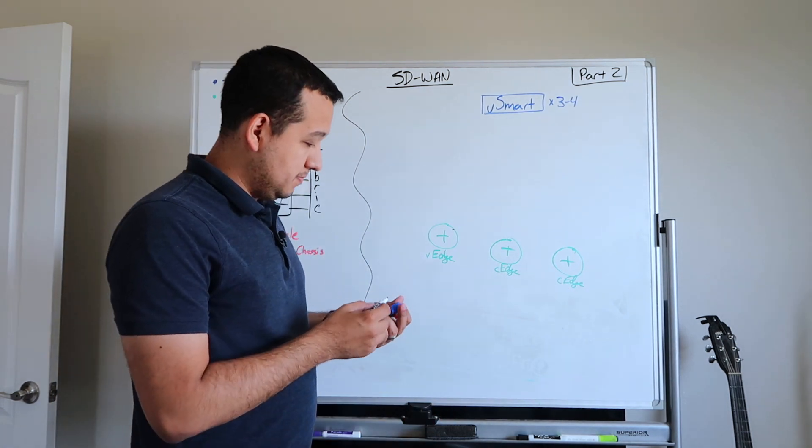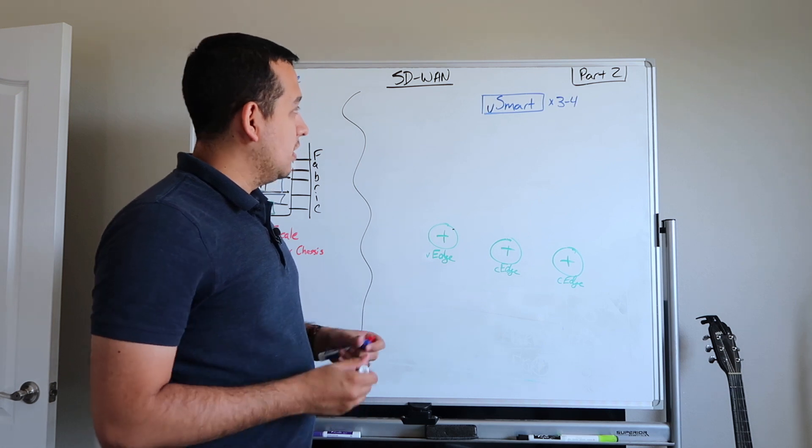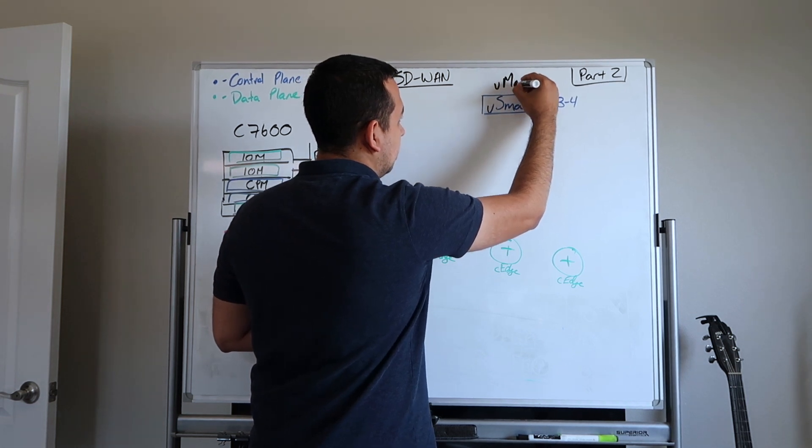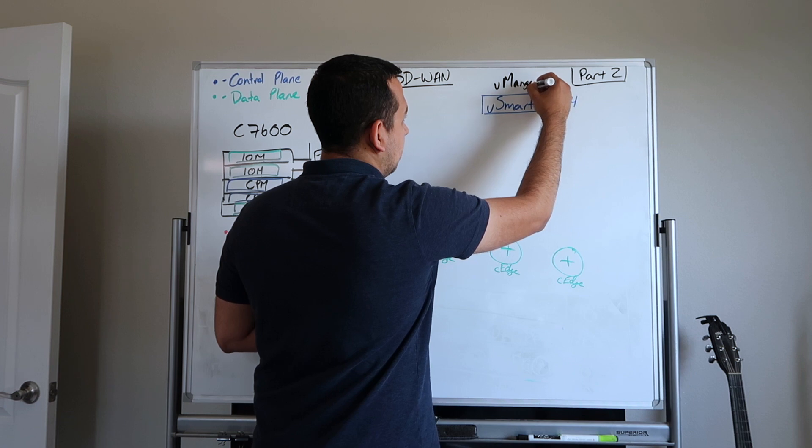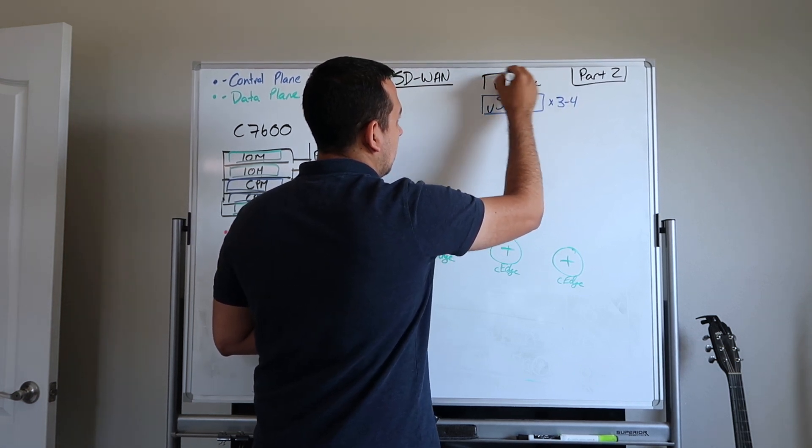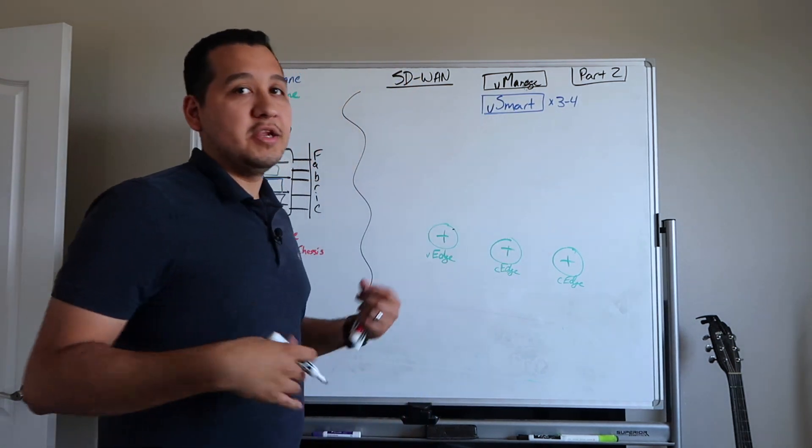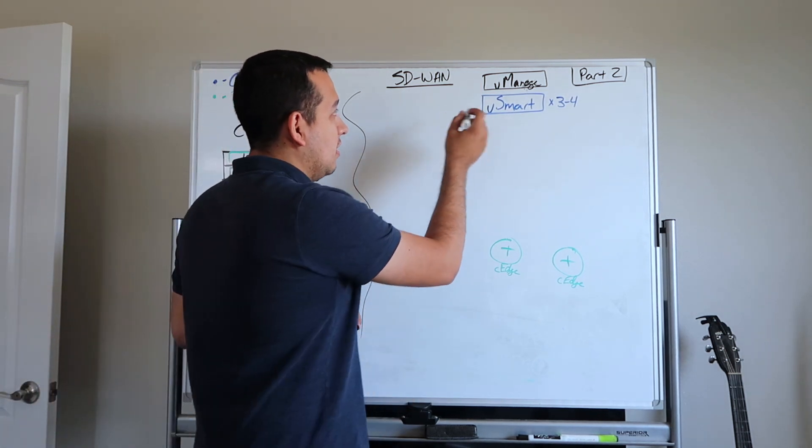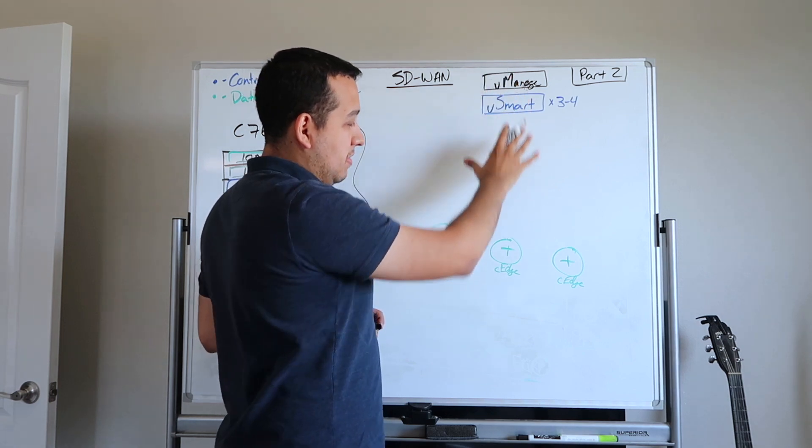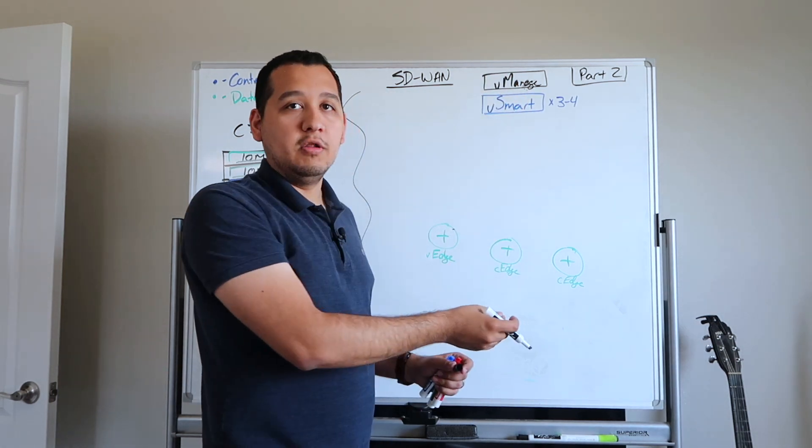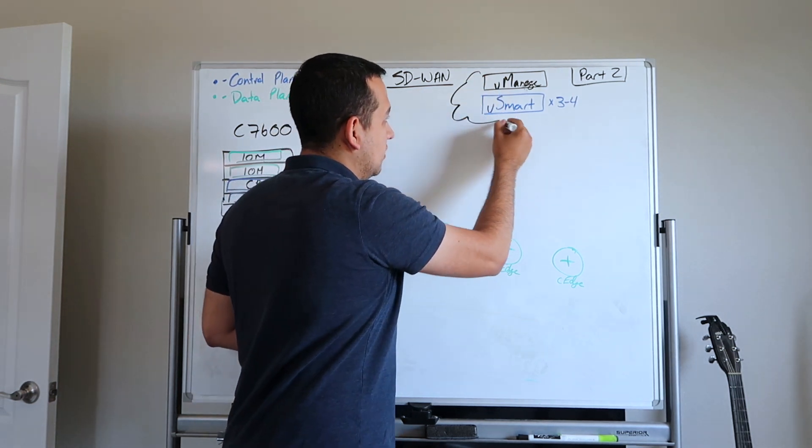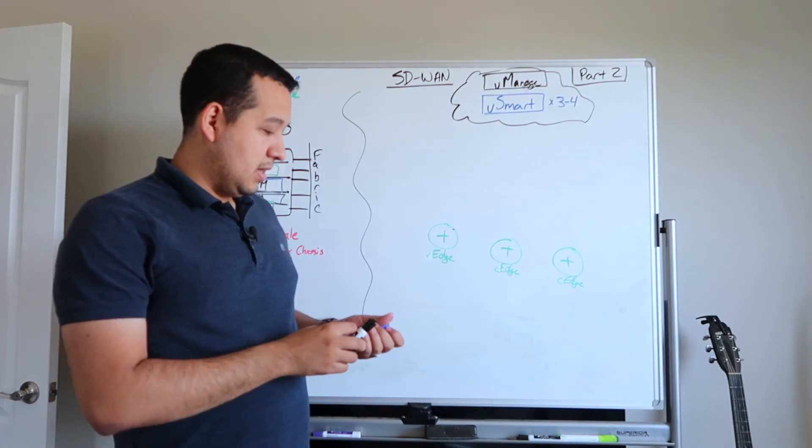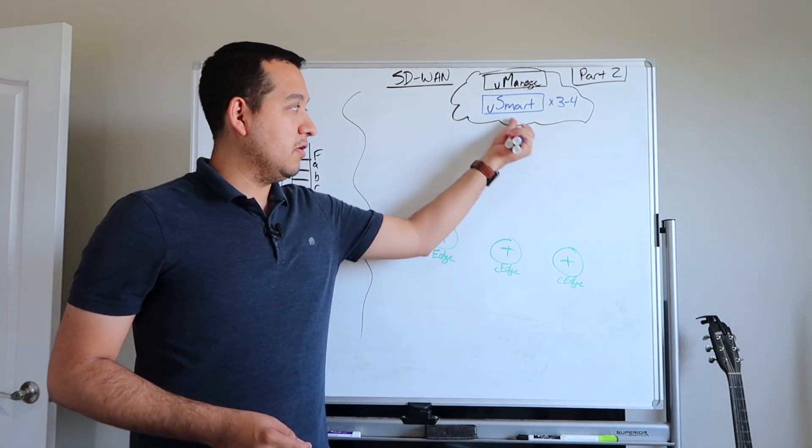This is all managed through a separate box that we call the Vmanage. The Vmanage is simply the management plane, essentially. This is completely outside of the Vsmart and anything else. The user goes into Vmanage to manage everything from the control plane to adding and provisioning all of the routers. This is all usually put up in the cloud and provisioned for you by Cisco. You can also do some of this on-prem as well. So now what leaves us here is how do we connect these two together.